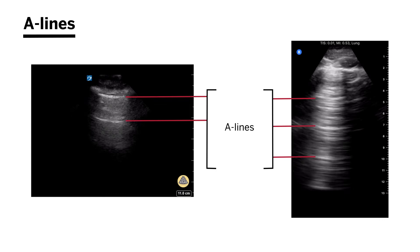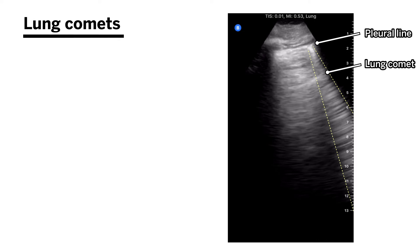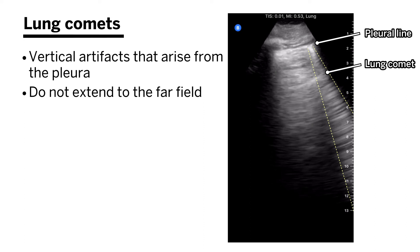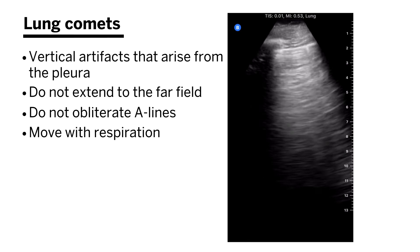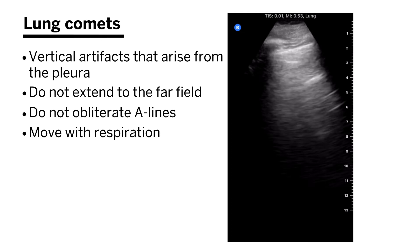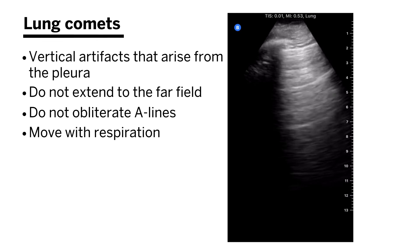Next up is lung comets. Lung comets are vertical artifacts that arise from the pleura but do not extend into the far field of the image. They represent little irregularities in the pleural line that cause artifacts as sound traverses them. These artifacts don't go all the way into the far field, do not obliterate A-lines, and do move with respiration — differing from B-lines in those ways. They are fainter than B-lines and are hard to see without the linear probe. Lung comets are a normal finding and a good indicator that pleura is apposed to pleura.